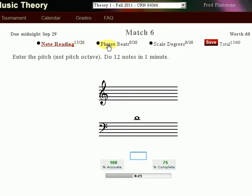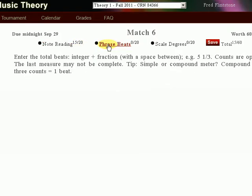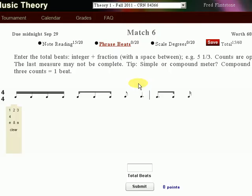In phrase beats I'm going to calculate how many beats are shown. I get two points for each correct answer and subtract two points for incorrect answers. Here I have four four meter, four beats per measure, so I know I have four beats to the bar line. Here's a fifth and a quarter. The answer is five and one quarter. I type that in and hit submit and I get two points. That advances to the next problem.